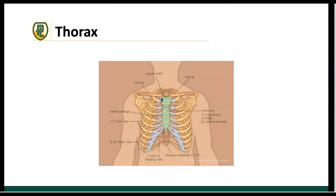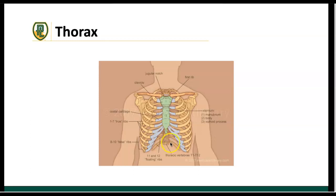On the most anterior aspect of the thorax, we also have the ribs. We have 12 distinct sets of ribs on the right and left side. Seven of those ribs are our true ribs, which means they have a direct attachment to the sternum. Ribs 8 through 10 are called false ribs because they don't have a direct attachment, but indirectly through ribs 6 and 7, they do attach to the sternum. All ribs have a posterior attachment to their respective vertebral body.